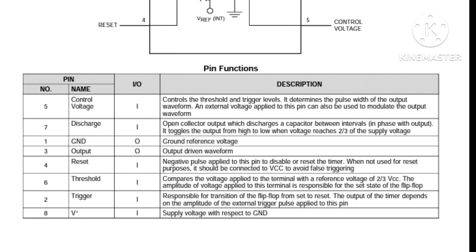Pin number one is GND, which is the ground reference voltage — this is where we're going to hook up the negative rail of a power supply or the negative terminal of a battery. Pin number two is the trigger, which is responsible for the transition of the flip-flop from set to reset. Pin number three is the output, where we'll have the output of the waveform generated by the IC.